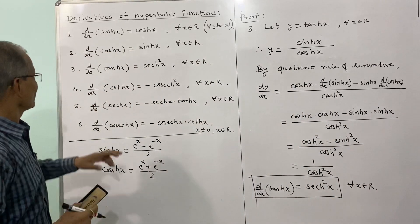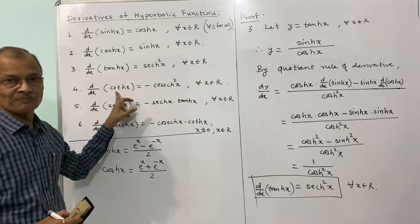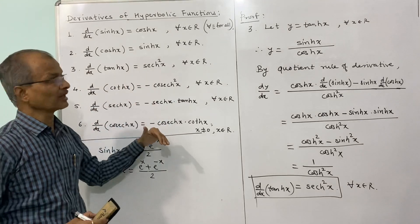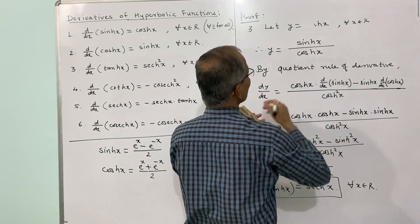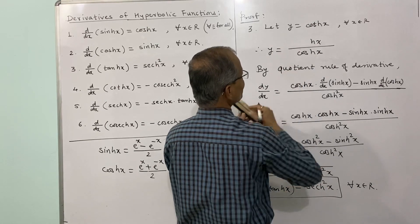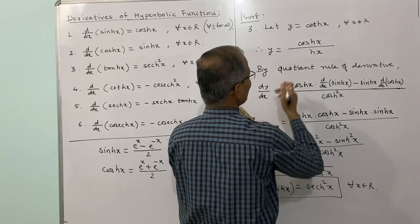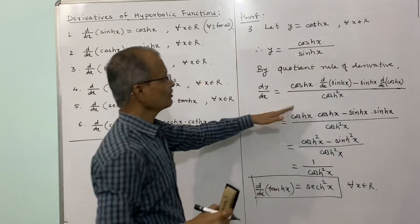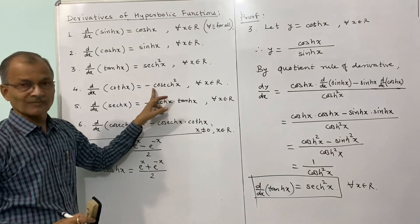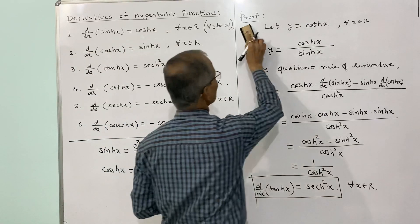For the fourth result, try it yourself in a similar manner. Write y equal to hyperbolic cot x. Hyperbolic cot x is hyperbolic cos divided by hyperbolic sin. Apply the quotient rule with the respective derivatives and you will get a negative sign — the result is negative hyperbolic cosech squared x.